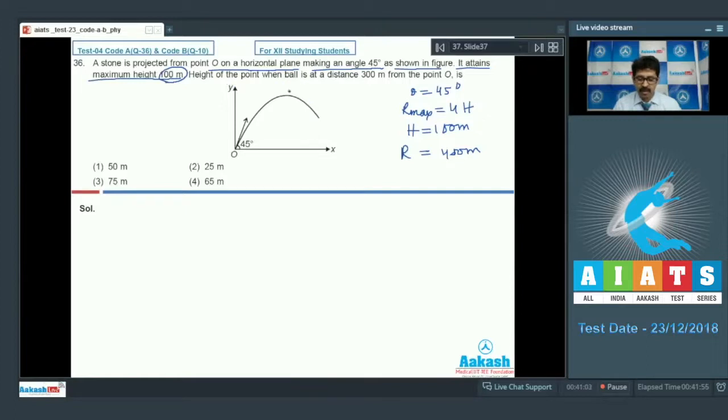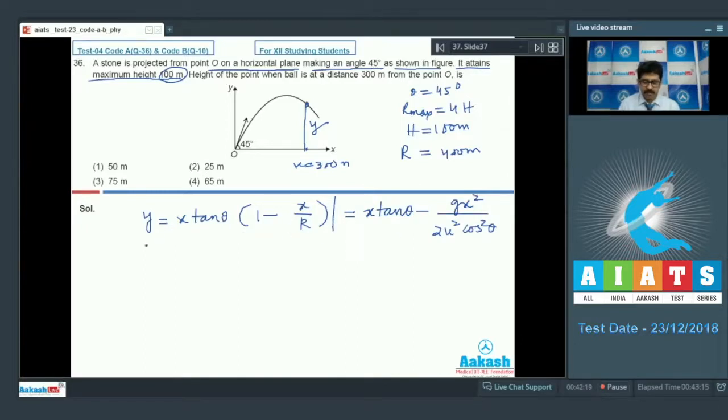Now, the height of the point when the ball is at distance 300 meters from point O. The point O, say 300 meter distance x equals 300. Here the instantaneous height of the projectile, the equation is 100 meters into 1 minus x by R position. 1 minus x, how much? 300. What is R? 400. Put the values and calculate. The answer coming out to be 75 meters.